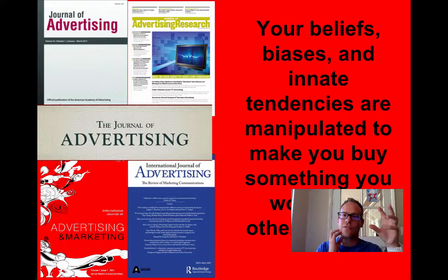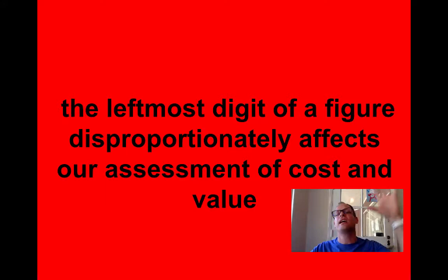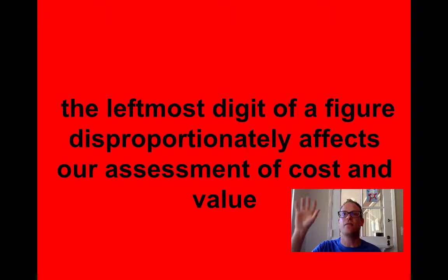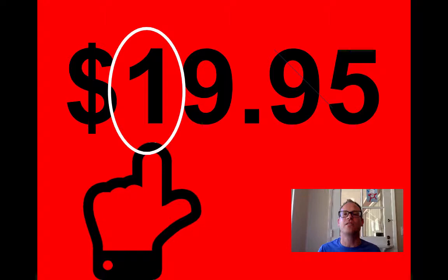Let's look at the left-hand digit bias error that your brain makes. You see it when you're looking at the TV and they say, 'Hey, you can buy this new Flobey hair cutter — it's only $19.99.' And you say, 'It's not even 20 bucks.' It's when that leftmost digit of a figure — you put too much emphasis on that — and that is how you assess the cost of something. Somebody says that's $19.95 — it's not even 20 bucks. Well, it's only a nickel different, but your brain assesses it differently.